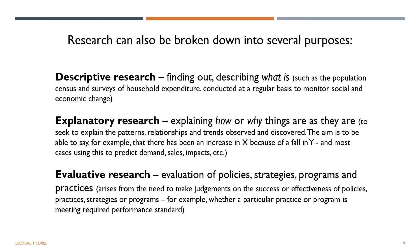In addition to basic and applied research, social science research can also be broken down into descriptive, explanatory, and evaluative research. Descriptive research is finding out or describing what is — for instance, the population census and surveys of household expenditure, conducted at regular intervals to monitor social and economic change. Explanatory research explains how or why things are as they are, seeking to explain patterns, relationships, and trends observed. The aim is to be able to say, for example, that there has been an increase in X because of a fall in Y, and it is often used to predict demand, sales impacts, etc. Evaluative research evaluates strategies, policies, programs, and practices. It arises from the need to make judgments on the success or effectiveness of policies, practices, strategies, or programs — for instance, whether a particular practice or program is meeting required performance standards.